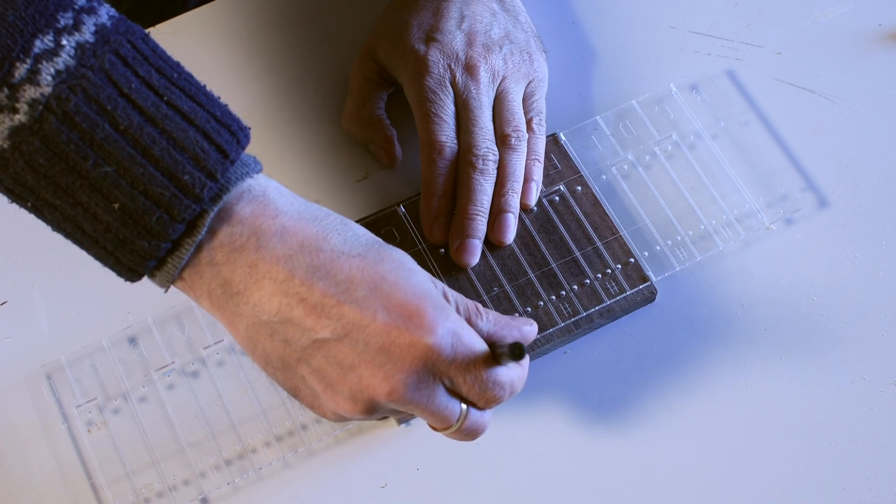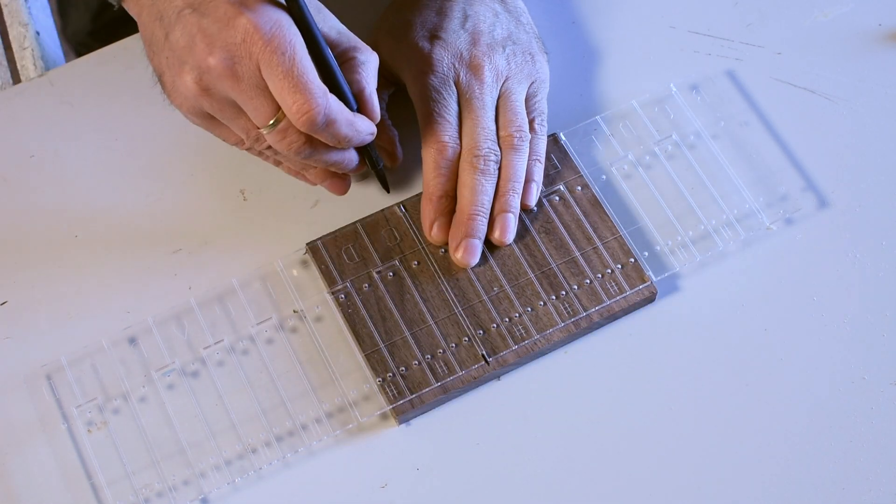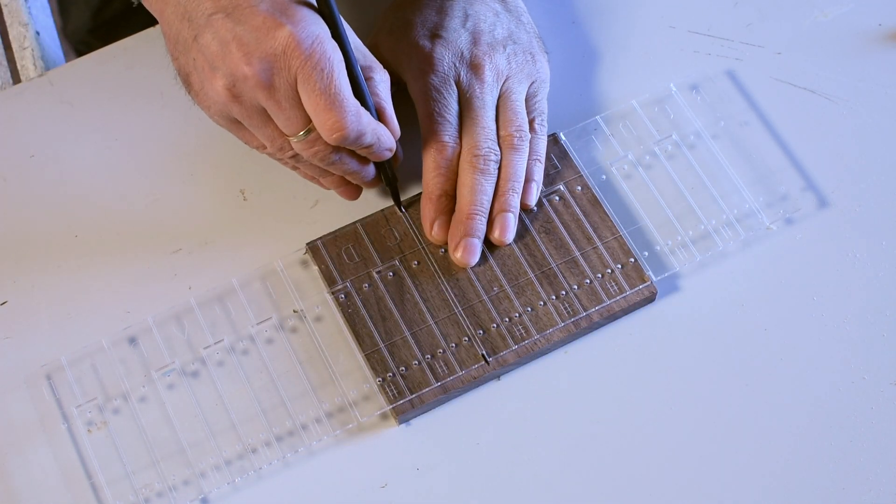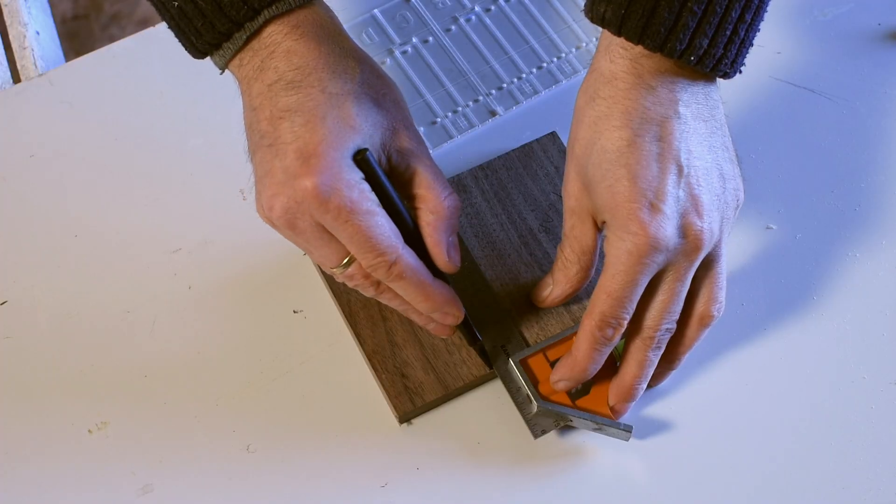Then, I marked the exact width always using the template. The thickness you see is that of the blade of my miter saw.